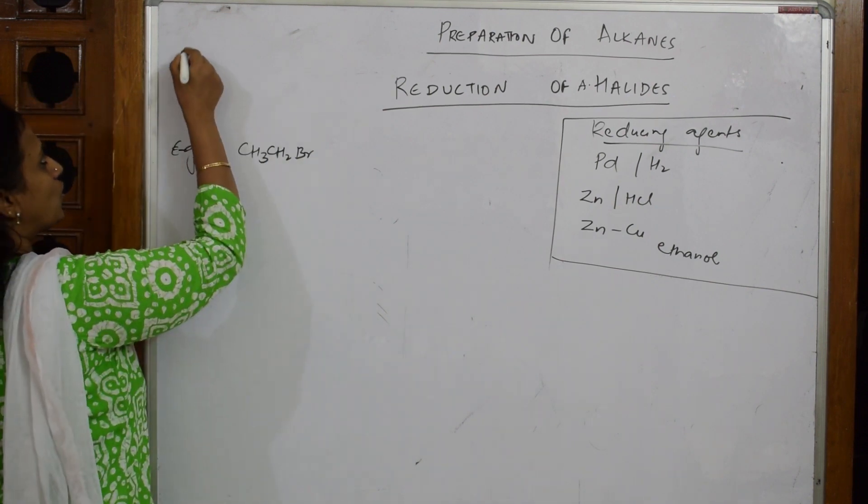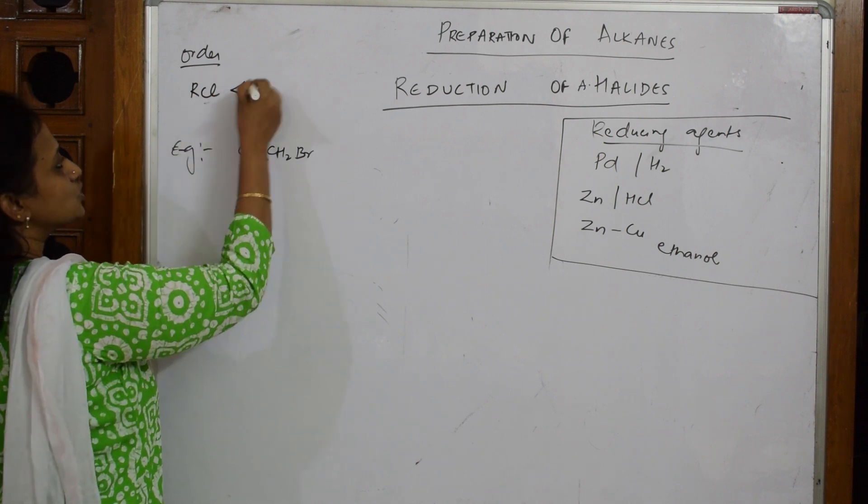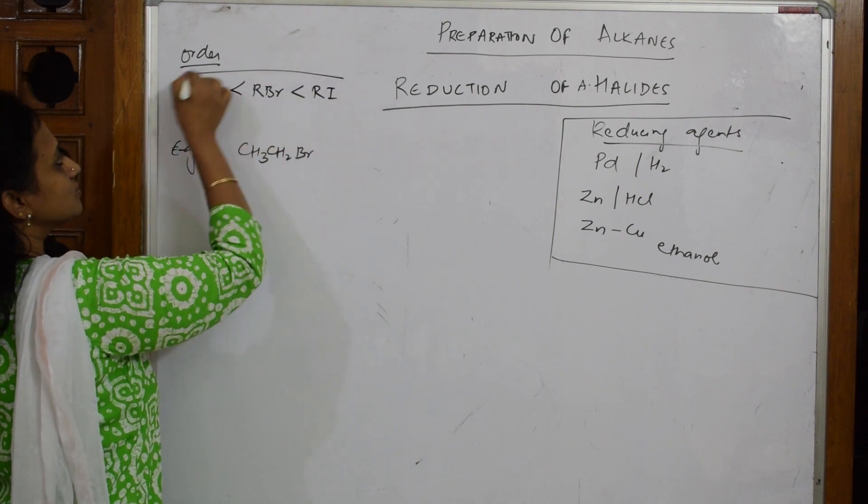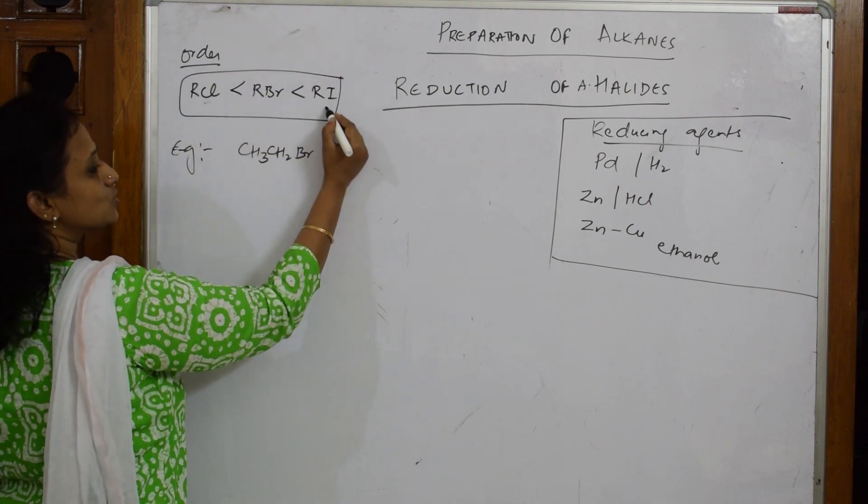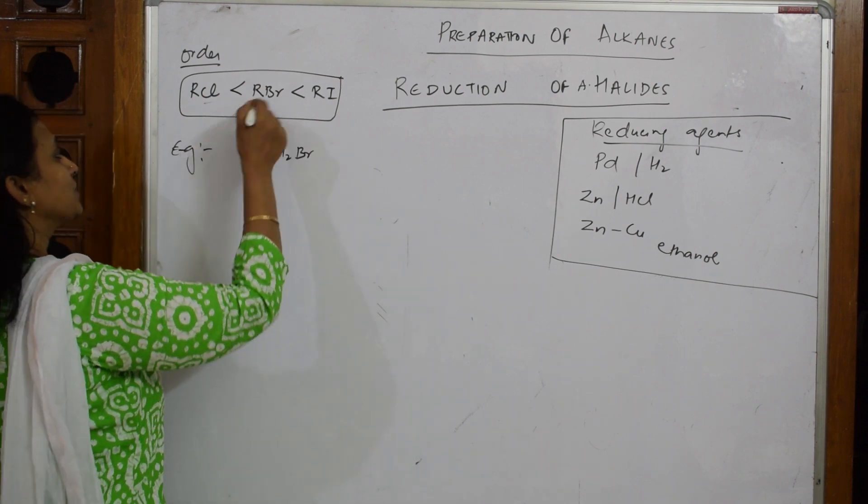Fluorine is highly electronegative so we will not take that. You would have started with chlorine, but basically whenever I see the order of alkyl halide, RCl is least reactive compared to RBr compared to RI. Among reduction, the order is - the highest one is RI. RI easily undergoes reduction because of its size, next comes RBr.